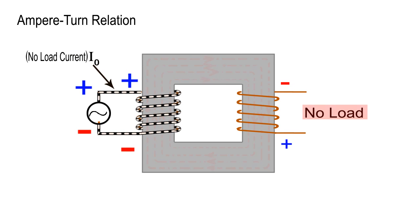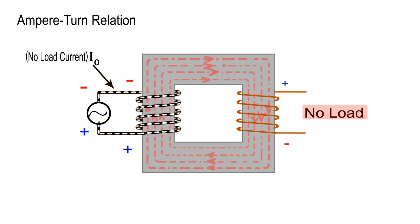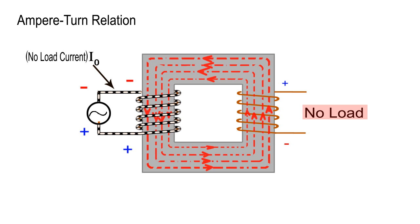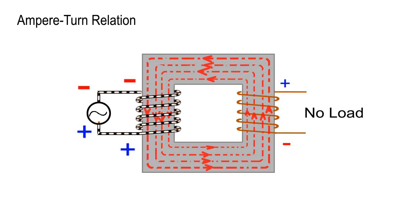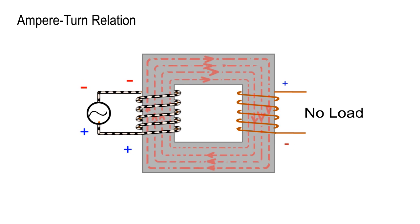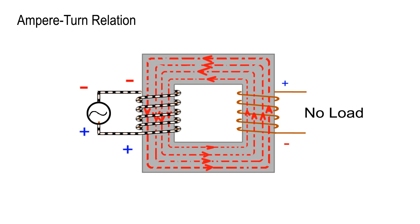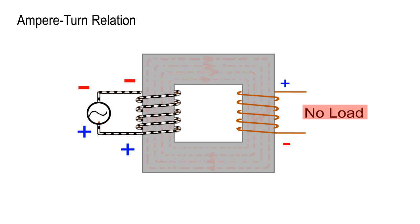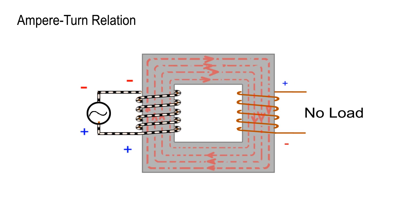Thus, the exciting current or no-load current I0 is small in magnitude, ordinarily being 3% of the rated current. The exciting current I0 is of small magnitude and generally differs considerably in phase from the total primary current. Therefore, it is normally neglected in comparison with the total primary current.